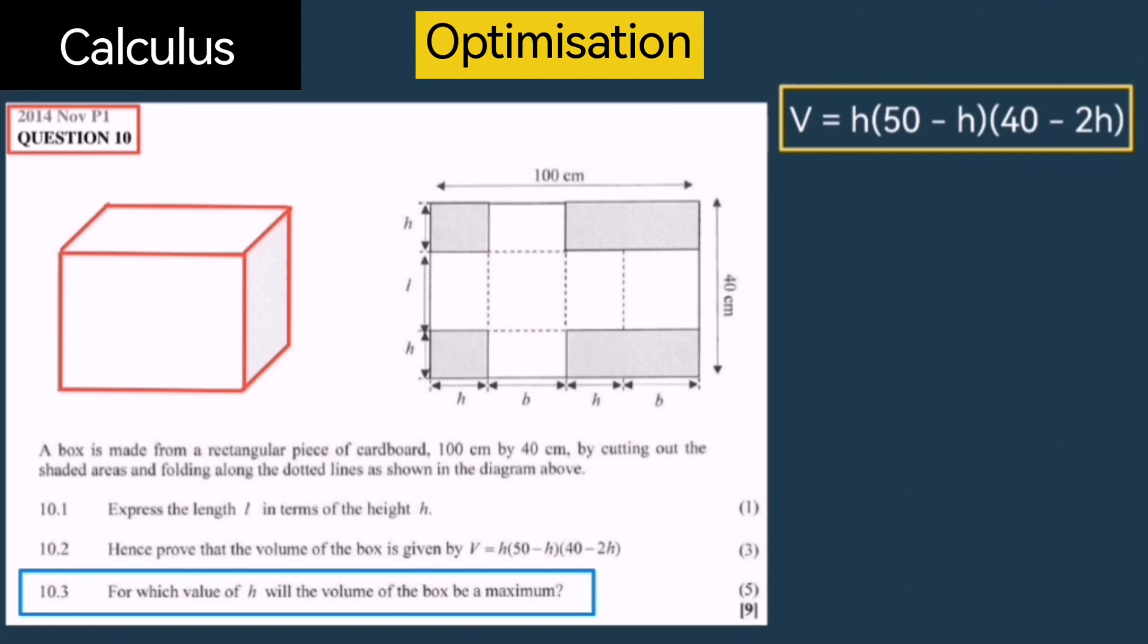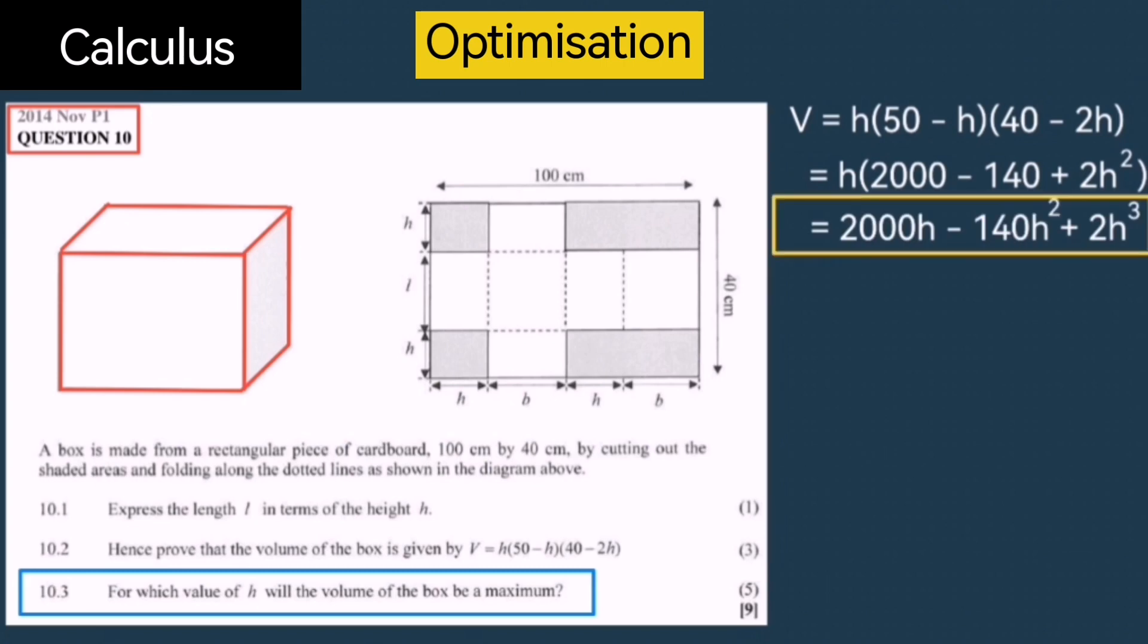Let's first simplify this equation we have for the volume by multiplying out. Multiply with the brackets, then also multiply with the H. Once you have it in this form, you can now take the derivative.